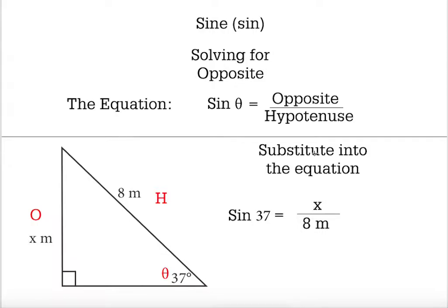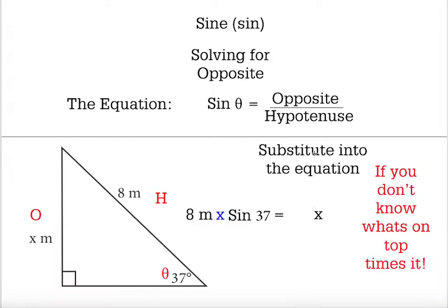At this point, you get stuck, then you just got to remember if you don't know what's on top, then times it. So we're going to move 8 meters to the left, and we're going to have 8 times sine 37 equals x.